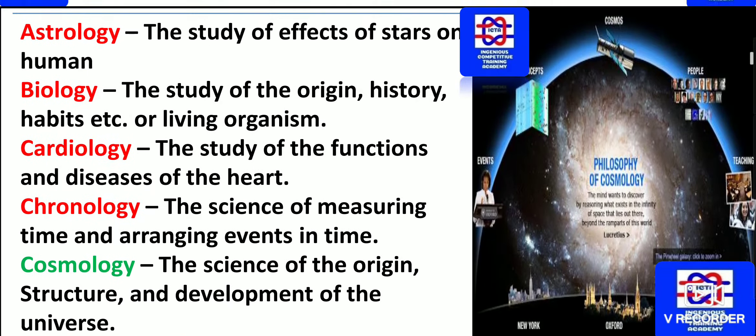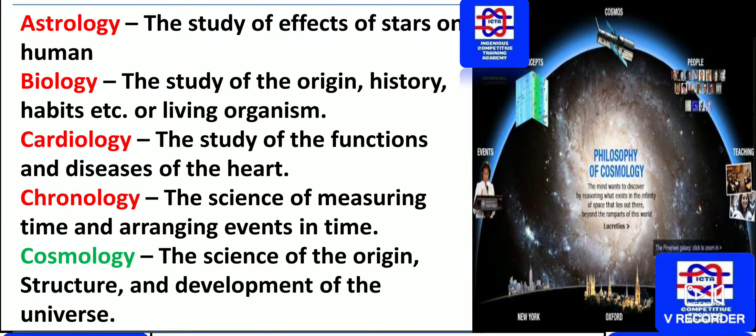Next we have astrology — the study of the effects of stars on human behavior. Astro means stars. In early morning, astrologists used to tell what will happen — your Aquarius or whatever — by looking at the effect of the stars, whatever incidents will happen will be catalogued.